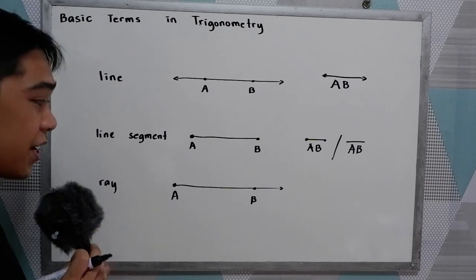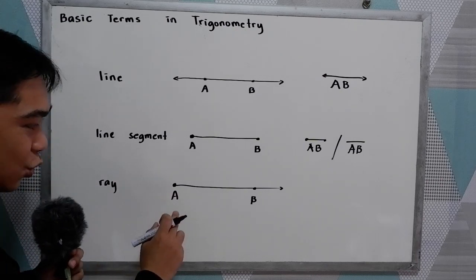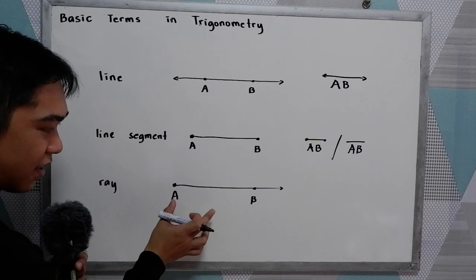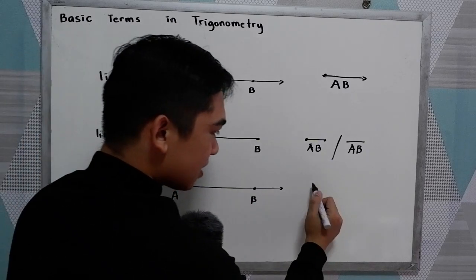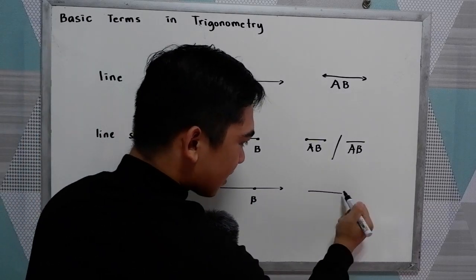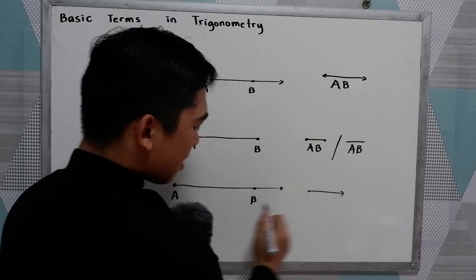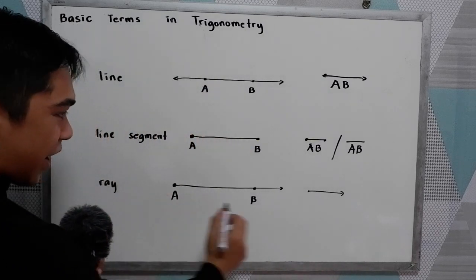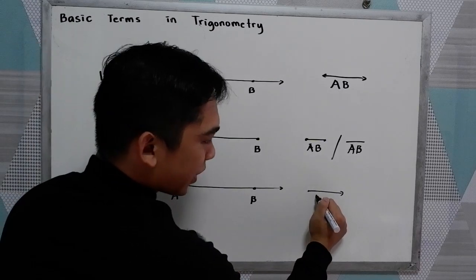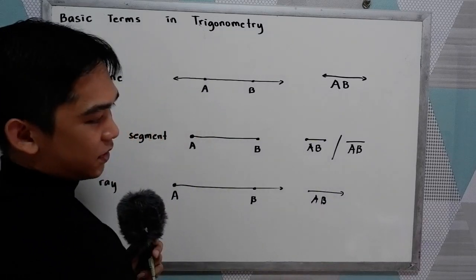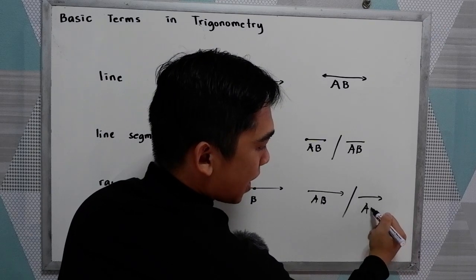Another term is the ray. We have two points — let's say A and B. We have a symbol for that: endpoint, then ray, then write the two points AB. Or simply, ray AB.